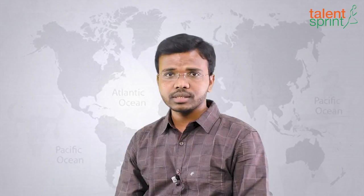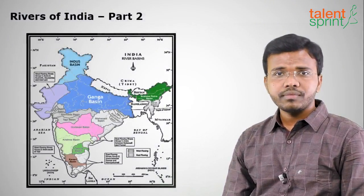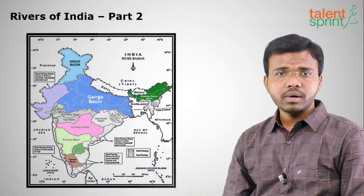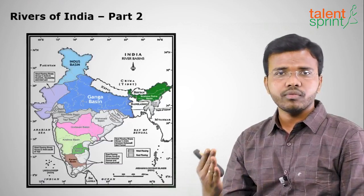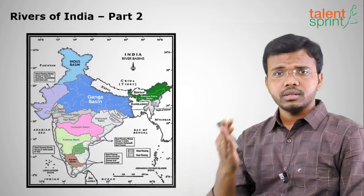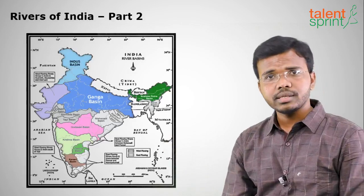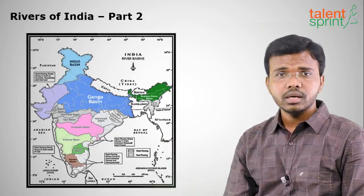Hello everyone, welcome to Talent Sprint. In this session of Geography, we shall discuss Part 2 of Indian rivers. In the first part, we discussed the Himalayan rivers which are perennial in nature — they flow throughout the year: the Indus, Brahmaputra, and the Ganges. Now we shall see the peninsular rivers.